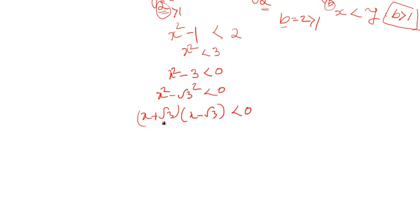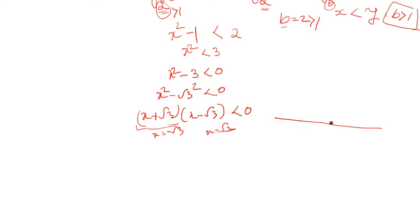Now we have to find the critical points — the values at which each bracket becomes zero. The first term, x + √3, becomes zero when x = -√3. The second bracket, x - √3, becomes zero when x = √3. We mark these two points, -√3 and +√3, on the number line.